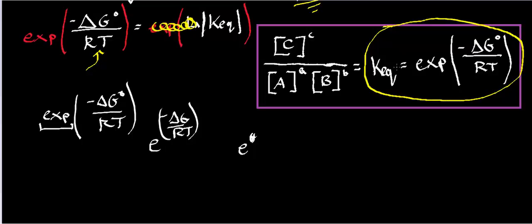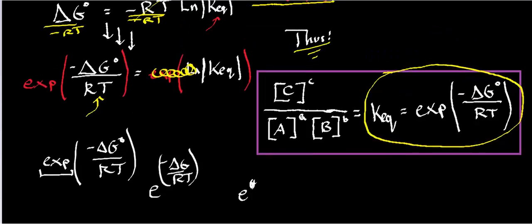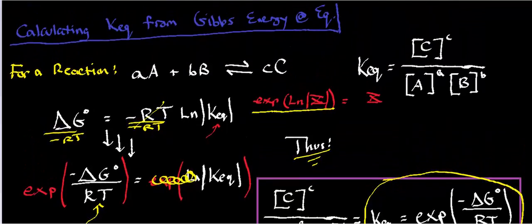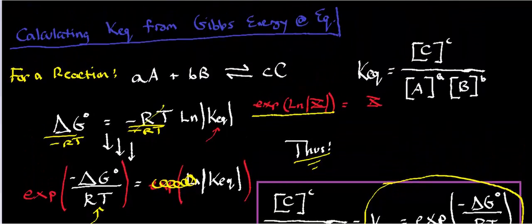So that's how you find the equilibrium constant if you know the delta G standard. So hopefully that made a little bit of sense. That's how you calculate equilibrium constant from Gibbs free energy.